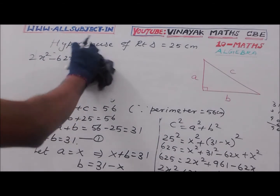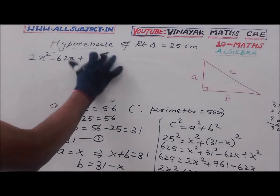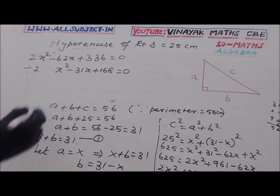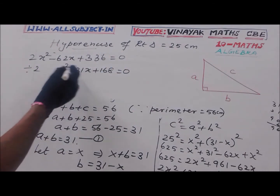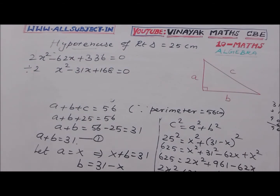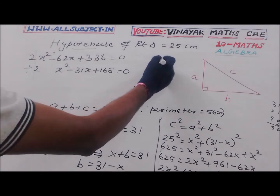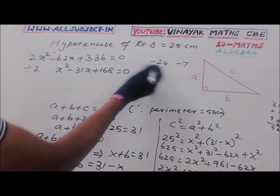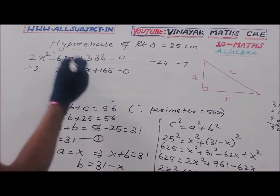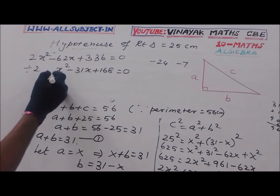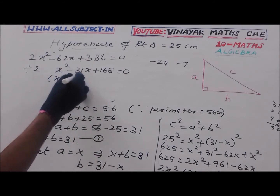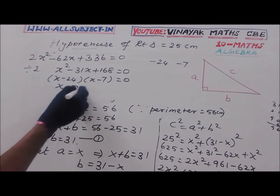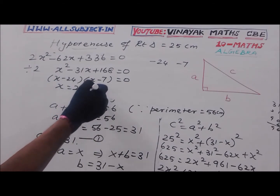Bringing terms to one side: 2X squared minus 62X plus 336 equals 0. Factoring, the numbers minus 24 and minus 7 multiply to give 168 and add to give minus 31, so (X minus 24)(X minus 7) equals 0, which gives X equals 24 or X equals 7.